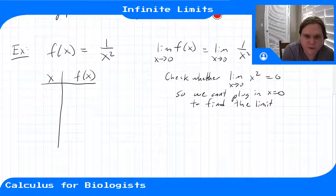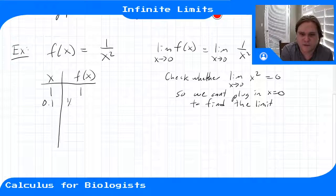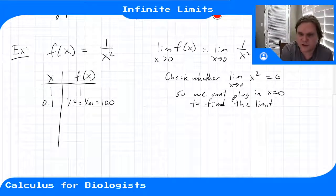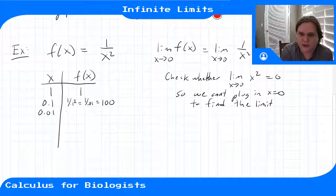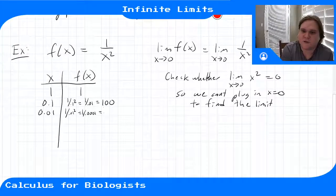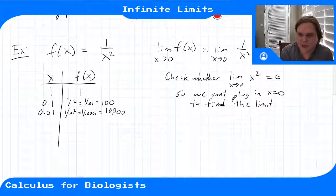Instead, let's look at some values. If we look at x equals 1, f(x) is 1. If we look at x equals 0.1, f(x) is 1 over 0.1 squared, which is 1 over 0.01, which is 100. If we look at x equals 0.001, this becomes 1 over 0.001 squared, which is 1 over 0.000001, which is 10,000.